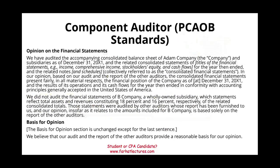Now if we're looking at a component auditor under PCAOB standards, we'll have an opinion and a basis for the opinion section. The language is similar: 'We have audited the financial statements of Adam Company.' Then: 'We did not audit the financial statements of the company, the wholly owned subsidiary — those statements were audited by other auditors whose report has been furnished to us, and in our opinion it looks good.' In the basis section: 'We believe that our audit and the report of the other auditor provide a reasonable basis for our opinion.' Notice we are relying on theirs — we are dividing the responsibility between us and the other auditor.